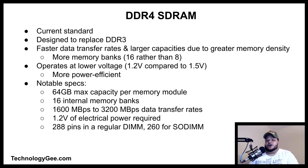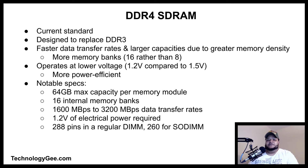DDR4 SDRAM is the current standard and the fourth generation of DDR RAM, designed to replace DDR3. Advantages include faster data transfer rates, larger capacities due to greater memory density, and 16 memory banks rather than 8. DDR4 operates at a lower voltage of 1.2 volts compared to 1.5 volts. Notable specs: 64 GB maximum capacity per module, common capacities of 16–32 GB, 1,600–3,200 MB/s data transfer rates, and 288 pins in a DIMM or 260 pins in a SO-DIMM.